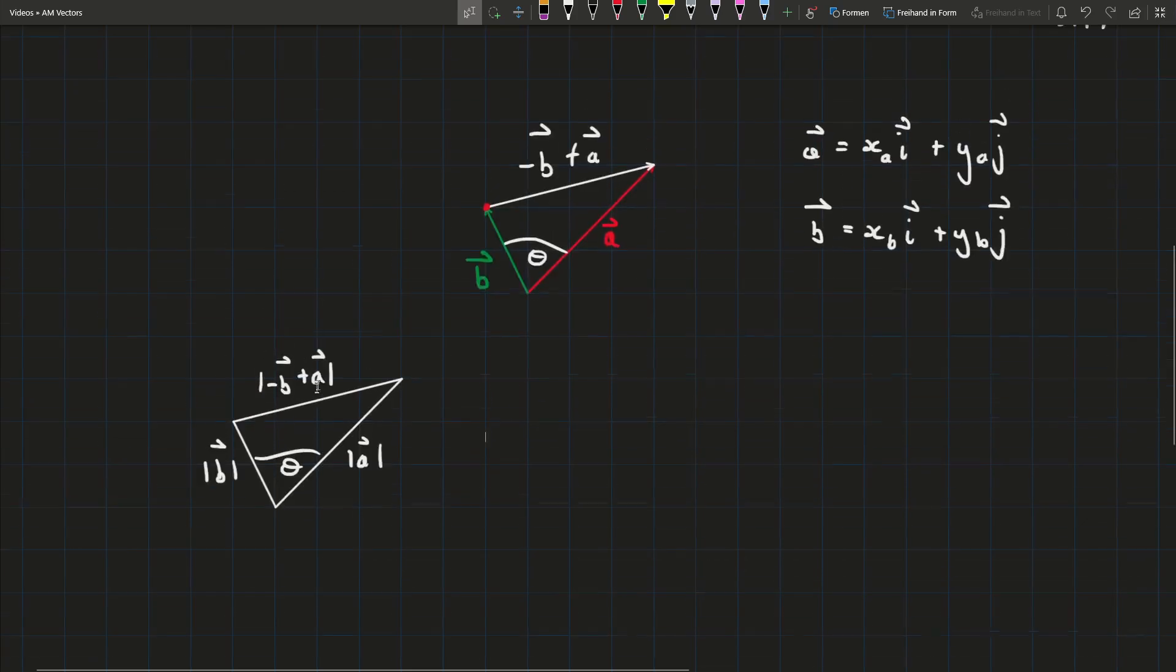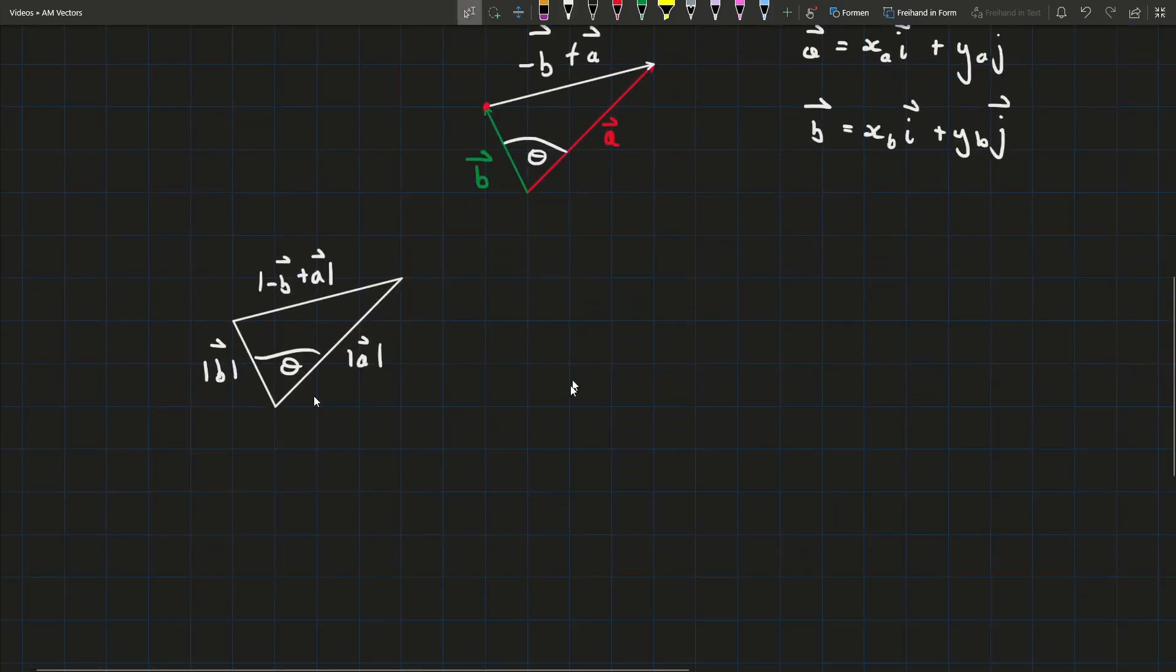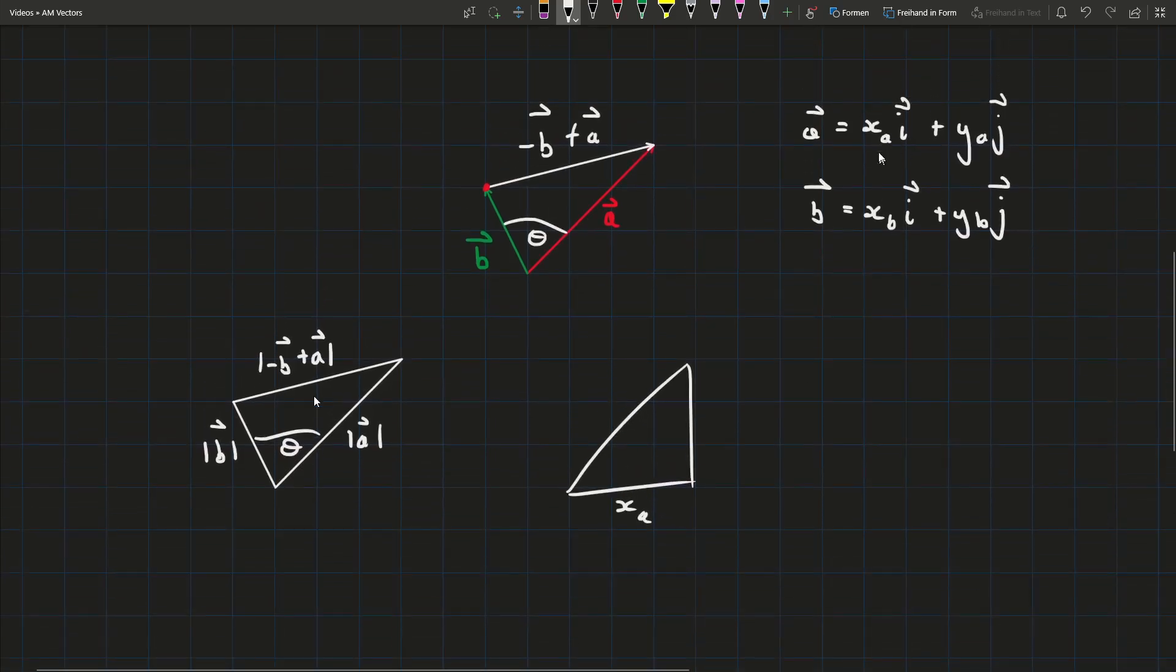So let's say for vector a we want to figure out what the magnitude is here's how we do it. We have this side is xa as we have up here that's the i component, the vertical one is ya, and then the hypotenuse is the length of vector a. So the length of vector a is just equal to the x component squared plus the y component squared.